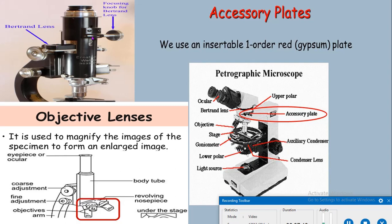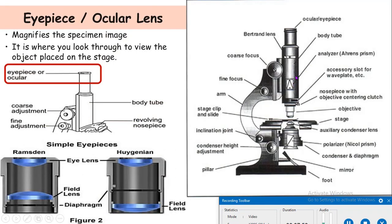The analyzer, or upper Nicol, is a polarizing device that can be inserted between the Bertrand lens and the objective lens. The analyzer is fixed to pass light waves which vibrate in the north-south plane. Since the polarizer passes only east-west direction and the analyzer passes only north-south waves, the presence of both crossed Nicols produces a black field of view.